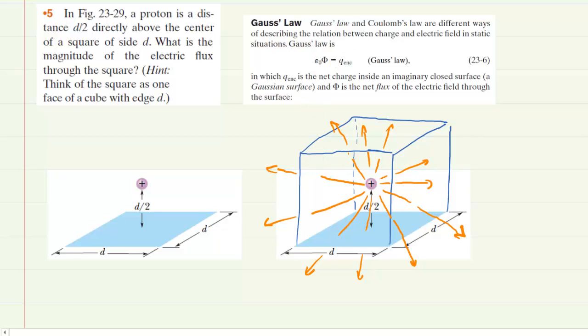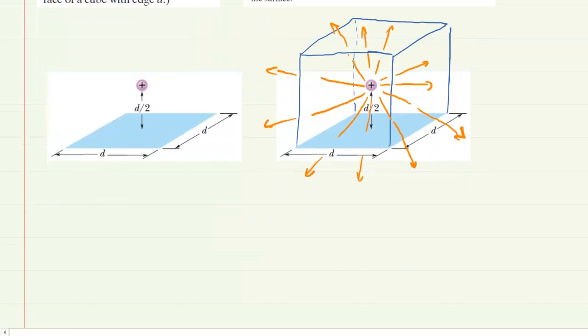The trick to this question is we don't want the total flux, we want the flux through just one of the six faces. So here's how we approach it. We're going to come down and rewrite Gauss's law.